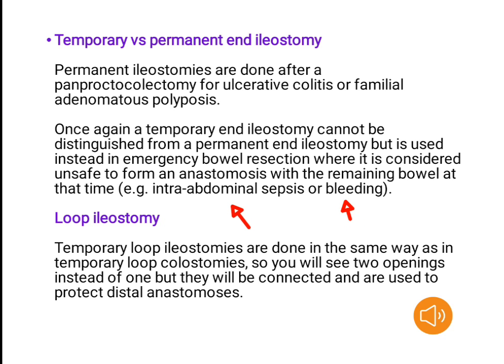Loop ileostomy. Temporary loop ileostomies are done in the same way as temporary loop colostomies, so you will see two openings instead of one, but they will be connected, and are used to protect distal anastomoses.